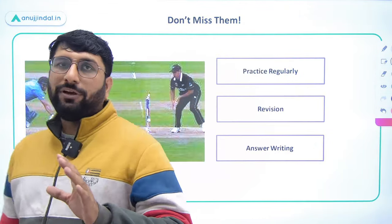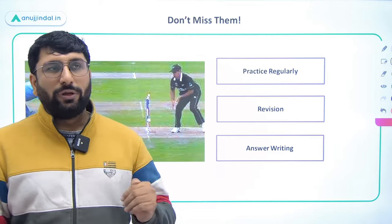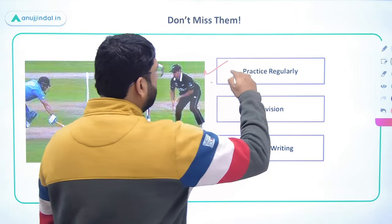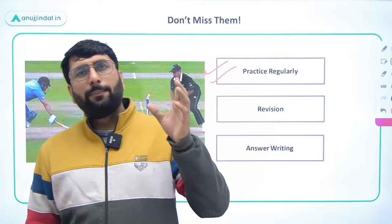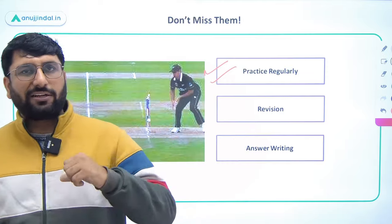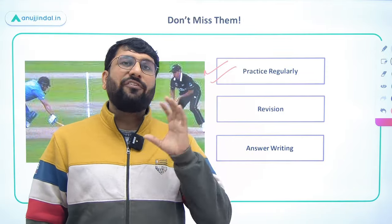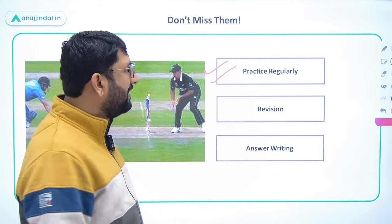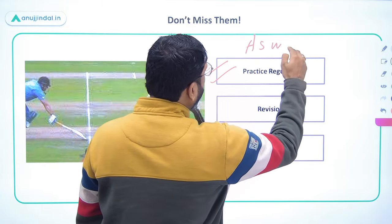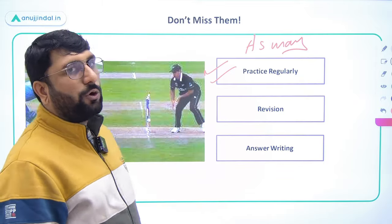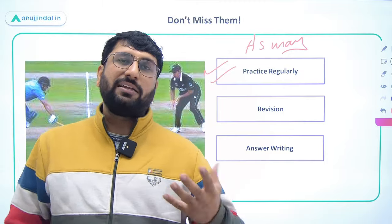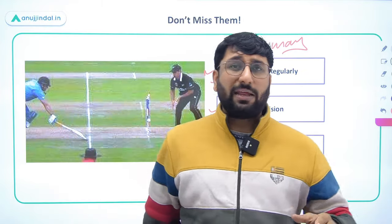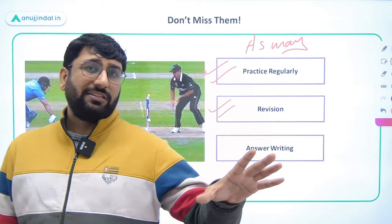These are the final pointers for scoring 35 plus marks in your finance segment. First, practise regularly — don't think you will practise MCQs only at the end. Once you complete a chapter, solve as many MCQ questions as possible right away. The more diverse a set of questions you practise, the better prepared you will be for the examination. Second is revision — the syllabus is very huge with approximately 14–15 chapters in finance and 3–4 in accountancy, making around 18–19 chapters in total.